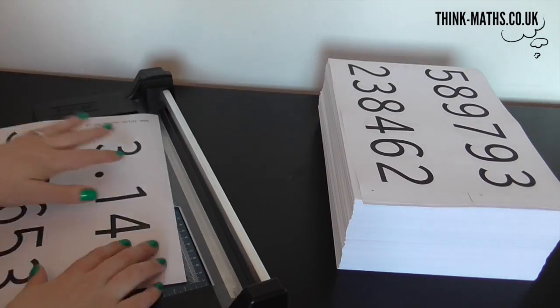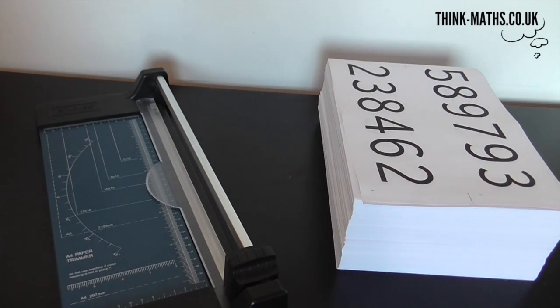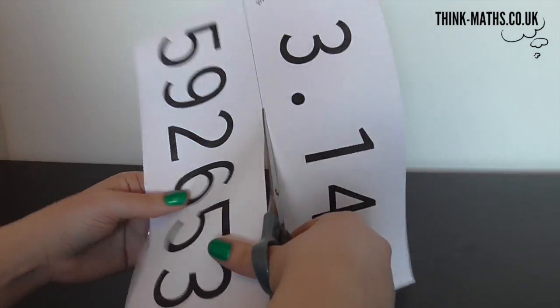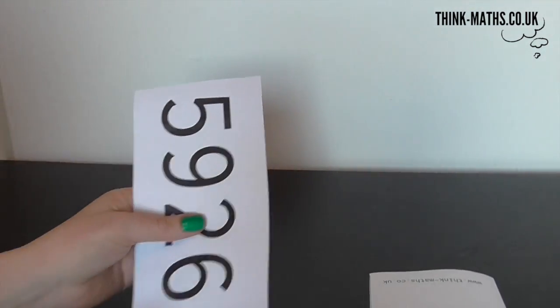Once you've printed the number of pages you want, you'll need to cut each page in half. We've supplied a version designed for use with a guillotine, and one for use with scissors if you prefer to do it by hand. Either way, you should end up cutting the paper exactly in half and end up with two strips the same height.